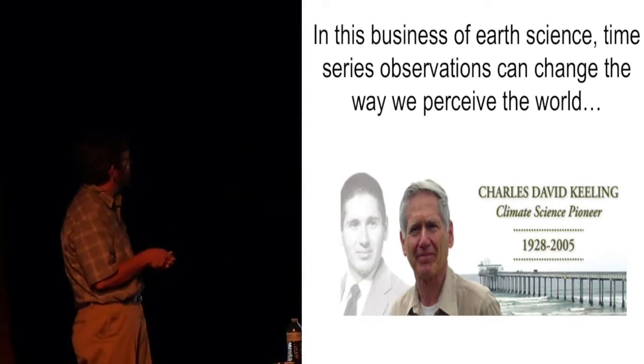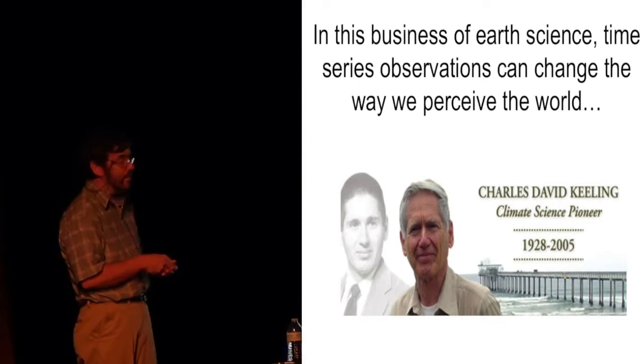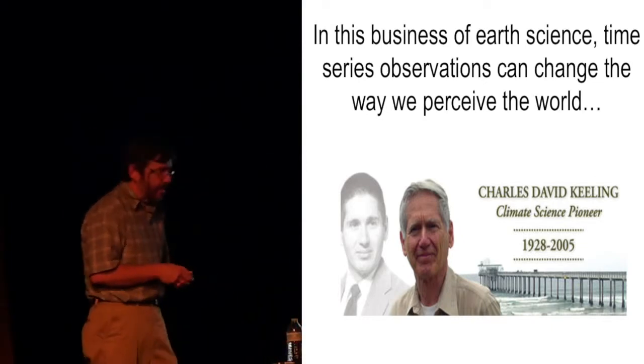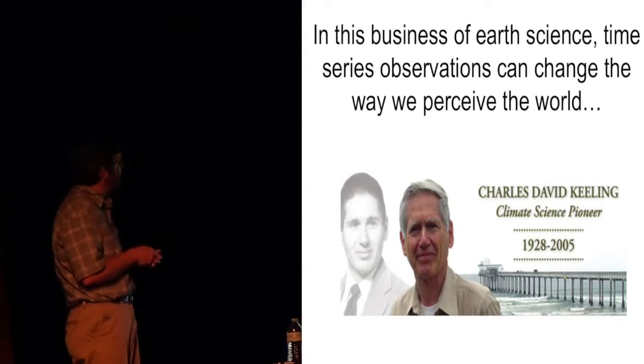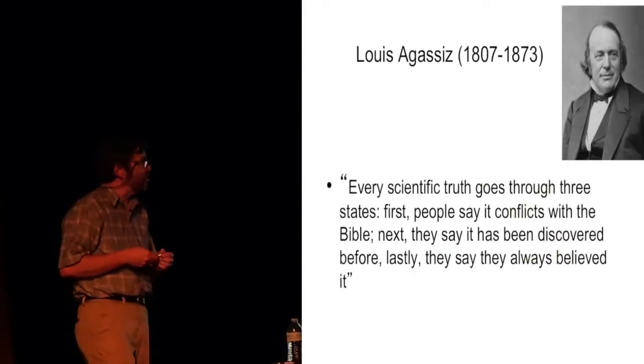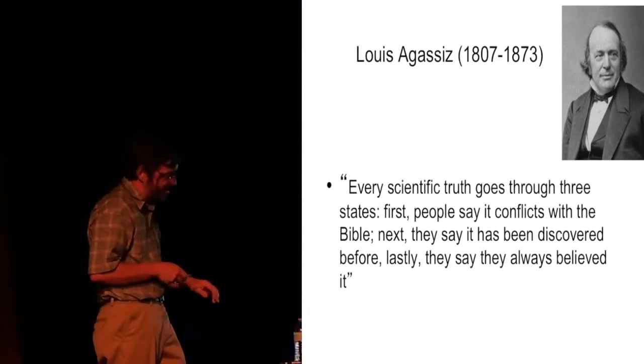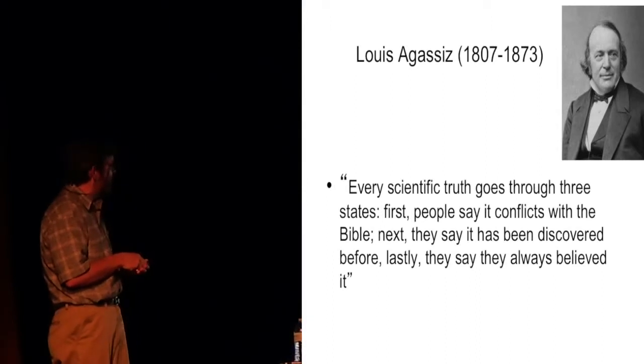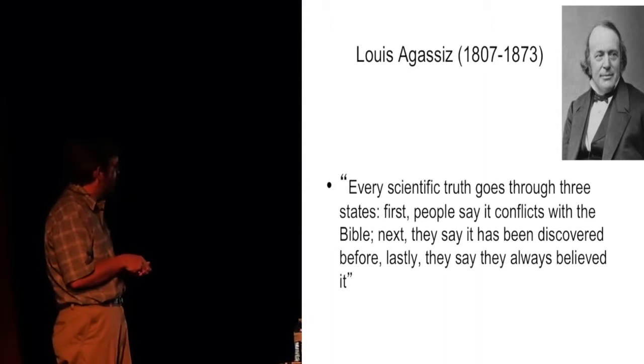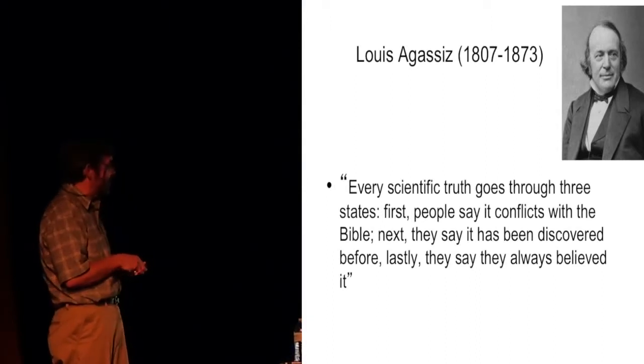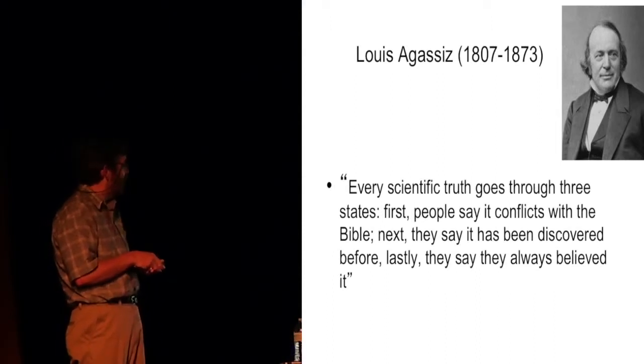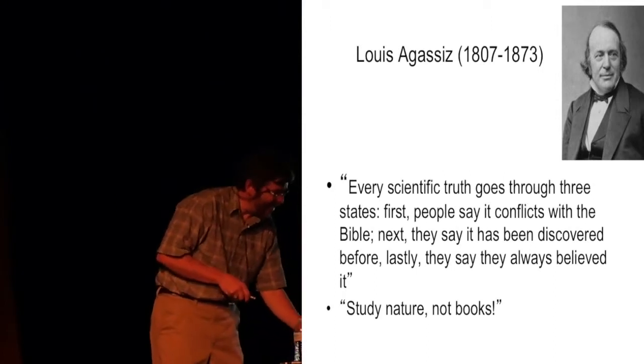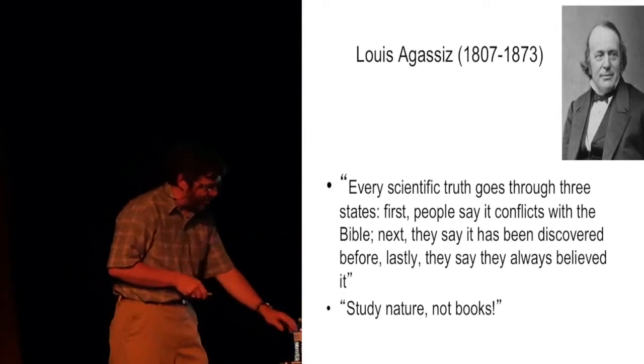In the business of earth science, time and series observations can change the way we perceive the world. And Keeling is certainly an example of that. I'm going to leave you with a couple of thoughts. And Louis Agassiz, who was a great naturalist from 1807 to 1873, he said, every scientific truth goes through three states. First, people say it conflicts with the Bible. Next, they say it has been discovered before. And lastly, they say they always believed it. And he also said, study nature, not books.